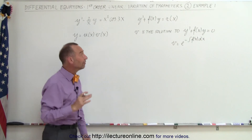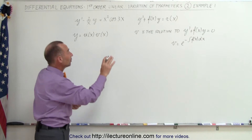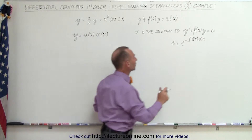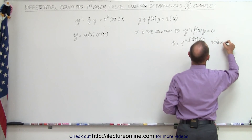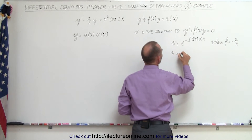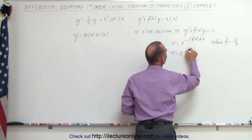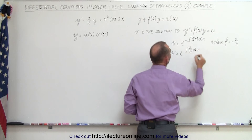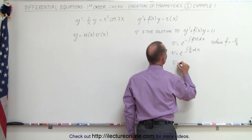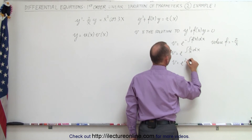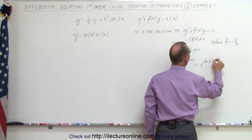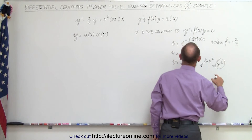Now that we know what v is equal to in theory, let's see what v will be for this particular equation. Here we know that f is minus 2 over x. So v is equal to e to the integral of 2 over x dx — the minuses cancel out. The integral of 1 over x is the natural log of x, so v equals e to the 2 times the natural log of x, which equals e to the natural log of x squared, which means v equals x squared.